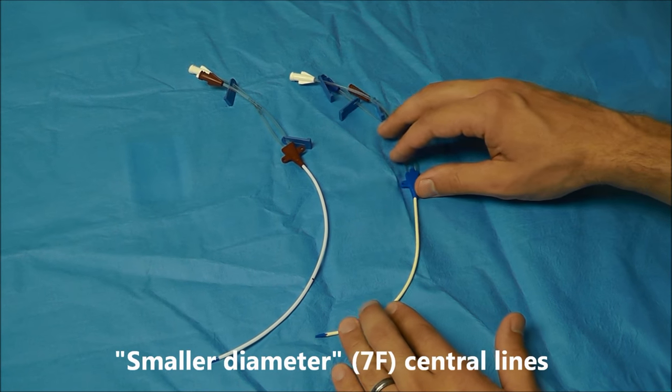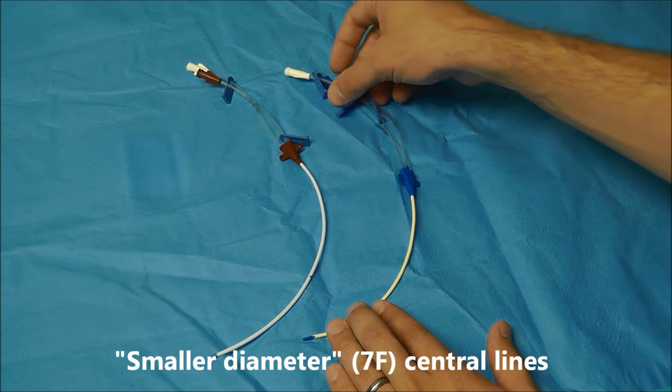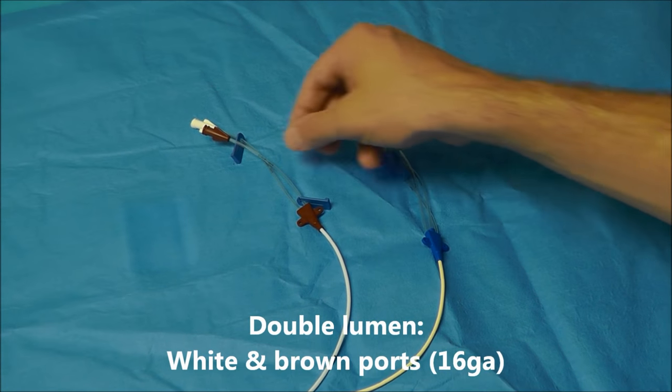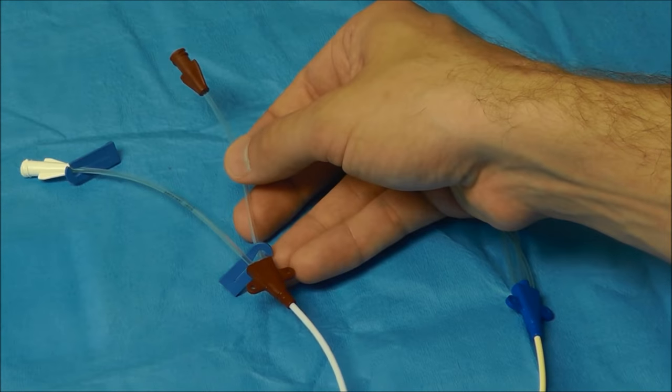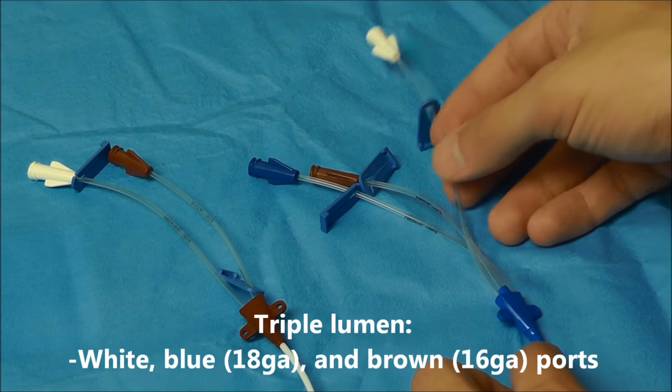Starting off with these smaller 7 French diameter central lines, some of them are just double lumen and then some of them are triple lumen because they have three lumens.